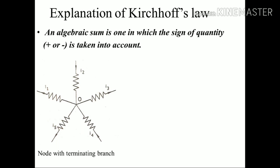Some of the current is moving towards point O, which is called incoming current, and the current which is flowing away from point O is called outgoing current. I2 and I4 are moving towards point O, and I1, I3, and I5 are moving away from point O.